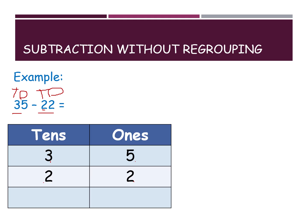Here we are doing subtraction. Always do the ones place first. What is the biggest number? 5. Keep it in your mind and open 2 fingers. Subtraction means going backward — before numbers. What is before 5? 4. And before 4? 3. What is 5 minus 2? 3.